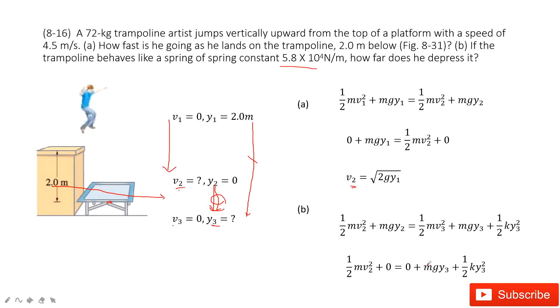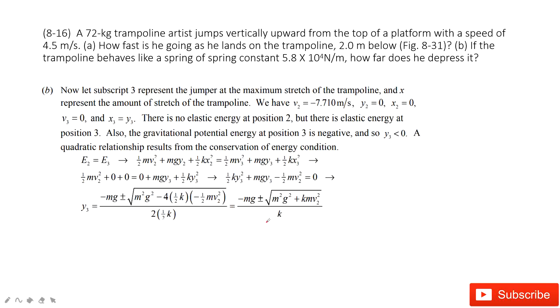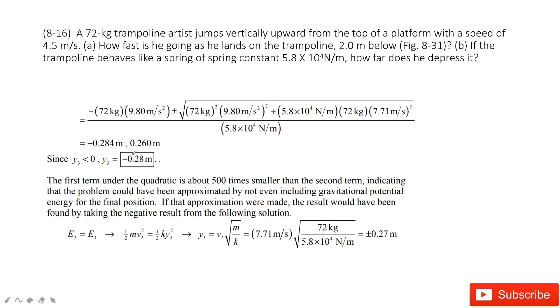And then we input the known quantities. Very easily, we can find y3. Now we input the known quantities inside. V2 is 7.7 meters per second. And then y3, we can solve these equations like there. And then get the final answer, negative 0.28.